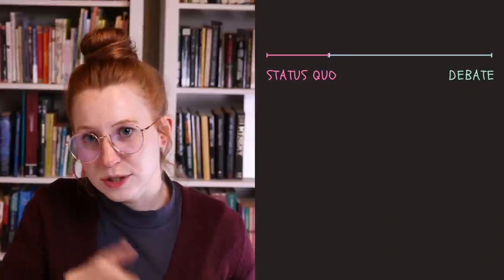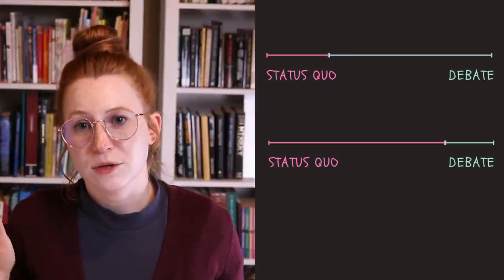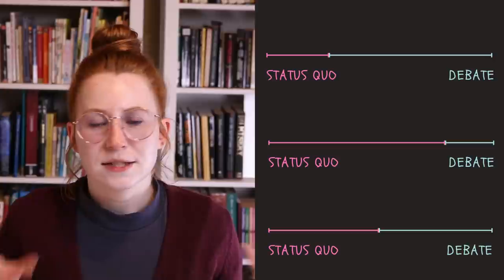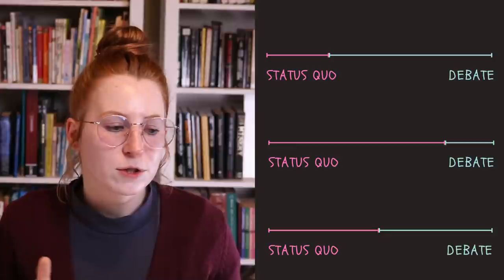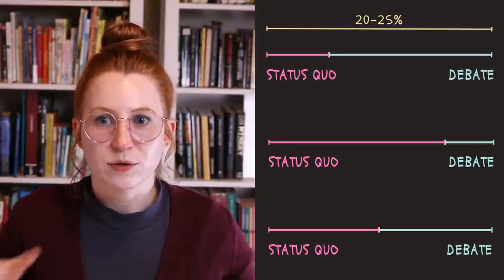I want to start by talking about the length of the debate section. If you watched the previous video, you might remember that we talked about the status quo being of a variable length — it can be very short or very long. The debate section is exactly the same, however it's dependent on the length of the status quo. A short status quo will most likely produce a long debate, and a long status quo will most likely produce a short debate. These two sections could also be closer to 50-50, and that's completely fine. We're shooting for about 20 to 25 percent of the total length of the story split between these two sections.